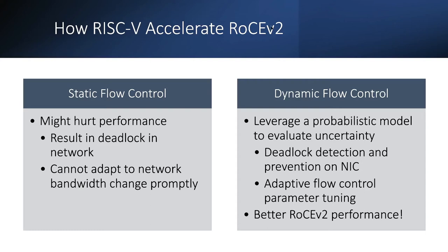So how do we overcome the RoCEv2 shortage? We propose a dynamic flow control, in contrast to the static flow control used by current RoCEv2. Static flow control might hurt performance because it might result in deadlock and cannot adapt to network bandwidth changes promptly. As for dynamic flow control, it leverages a probabilistic model to evaluate uncertainty, like deadlock detection and adaptive parameter tuning. Because we use dynamic flow control, it can improve RoCEv2 performance a lot.